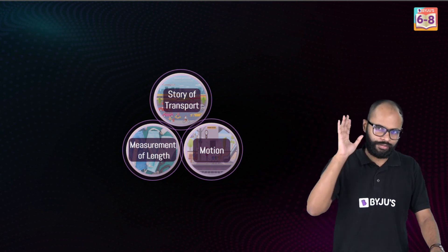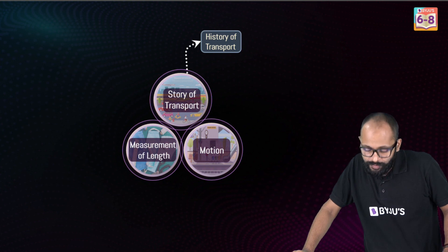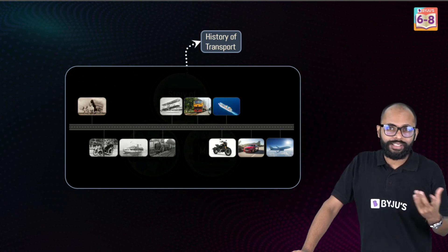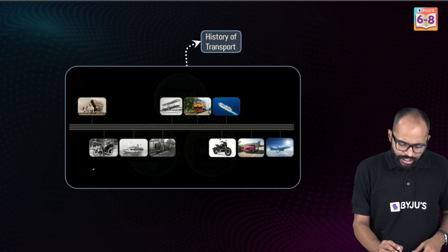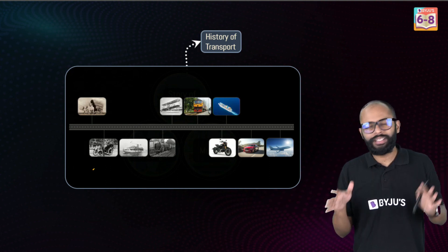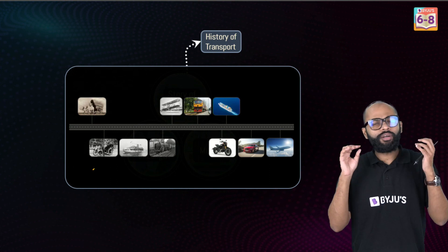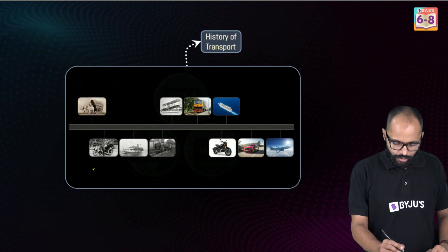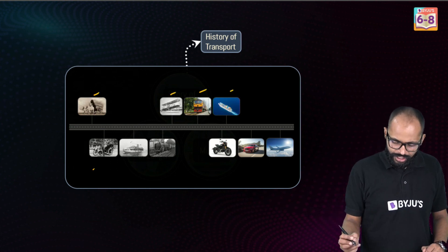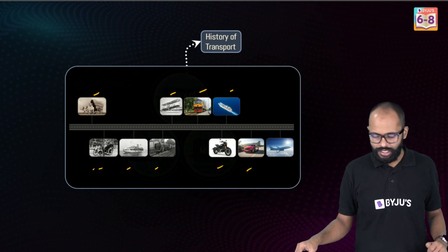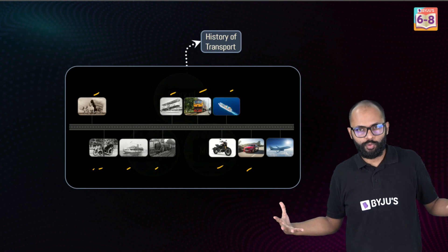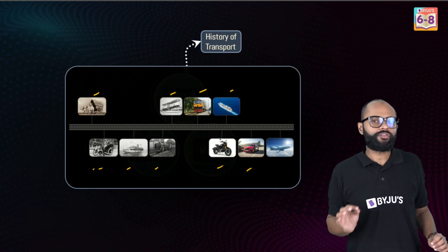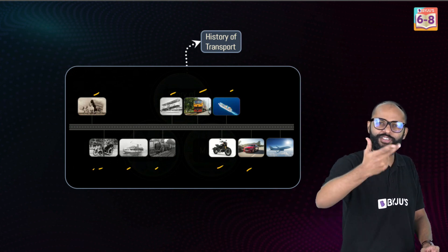Story of transport is kind of an easy chunk because it's a very detailed question. Story of transport means history of transport - how we started, Wright brothers made the first aeroplane in 1903, how was the steam engine. You should know the basics: first aeroplane, steam engine, how was the first car. We started with bullock carts but now we have trains, planes, yachts, ships, bikes. This is how we evolved in transport.